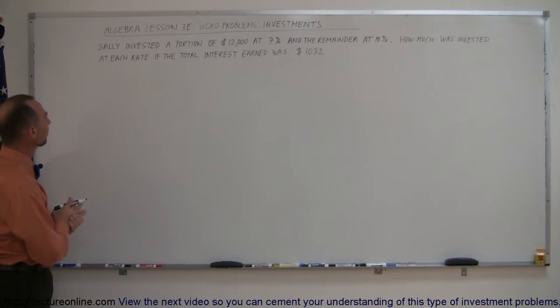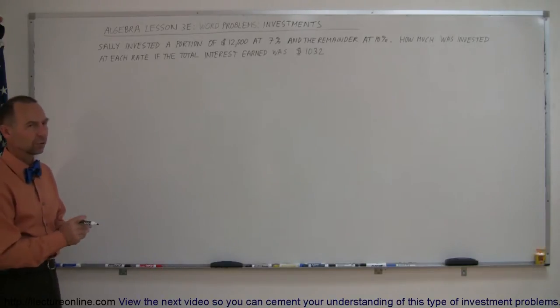Let's read the example. It says, Sally invested a portion of $12,000 at 7% and the remainder at 10%. How much was invested at each rate if the total interest earned was $1,032?